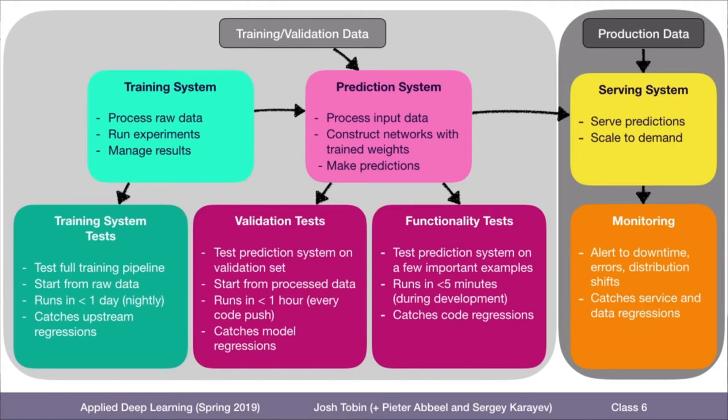On your prediction system, you have validation sets — testing regressions to your model itself. If you push an update to your model, you want to make sure it's still performing as well as it did before. And then functionality tests, which are quicker tests that can catch and make sure you perform well on really important examples or edge cases. Finally, once you've deployed the system into production, you want to monitor it — make sure it doesn't go down, you don't have data shifts, and you don't have more errors than you're expecting.